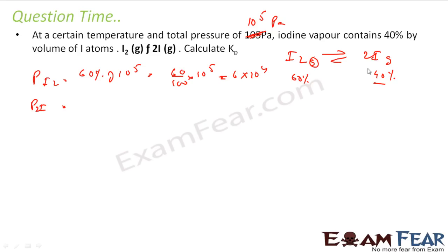Partial pressure of iodine atom will be what? 40% of 10 to the power 5 Pascal. That is nothing but 40 by 100 into 10 to the power 5, that is nothing but 4 into 10 to the power 4. So I got the partial pressure of both iodine gas and iodine atom.